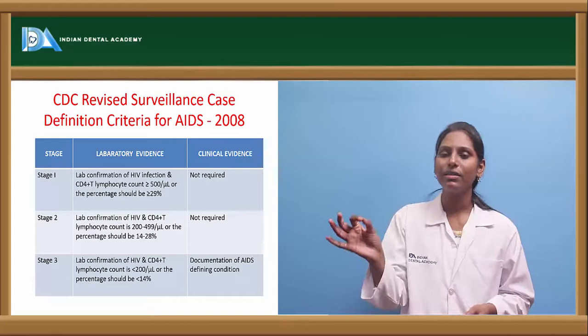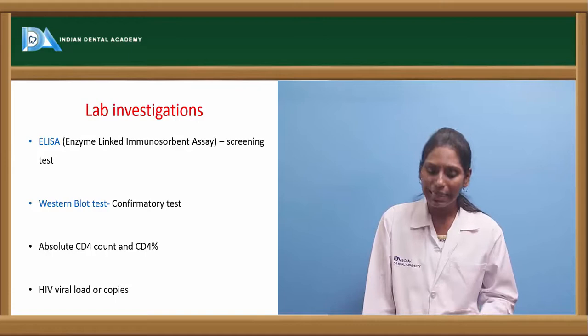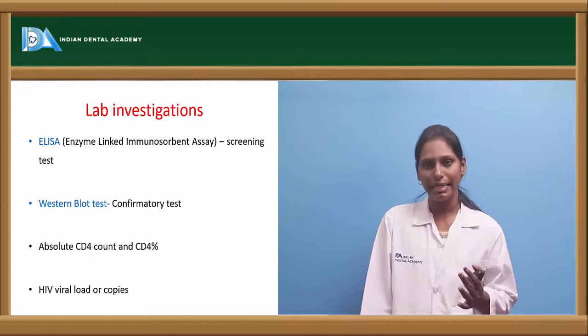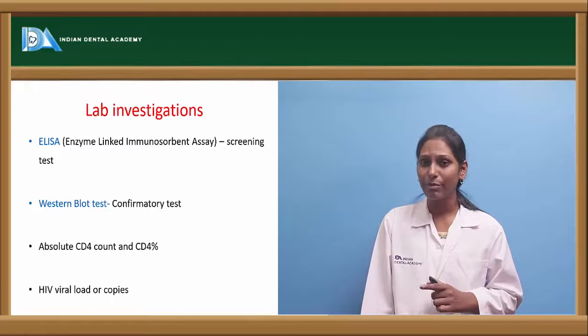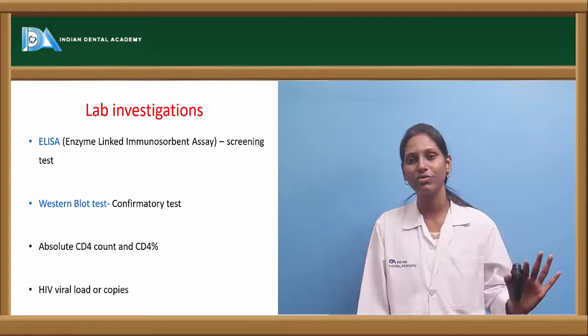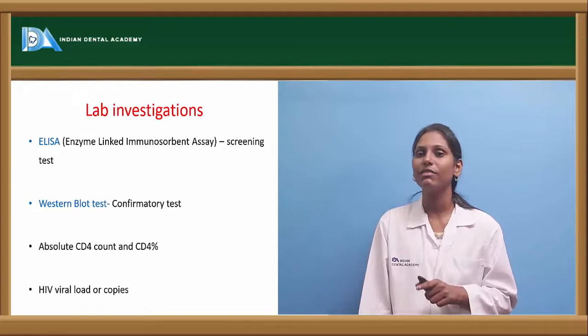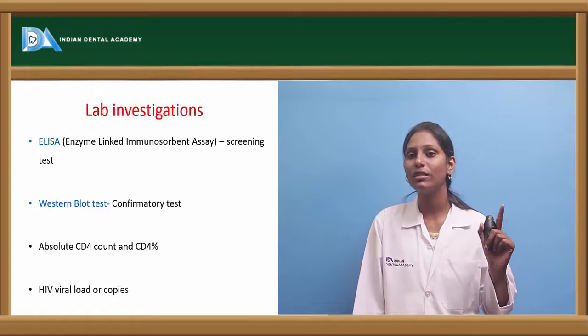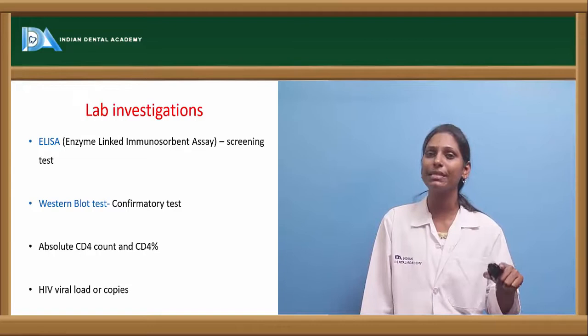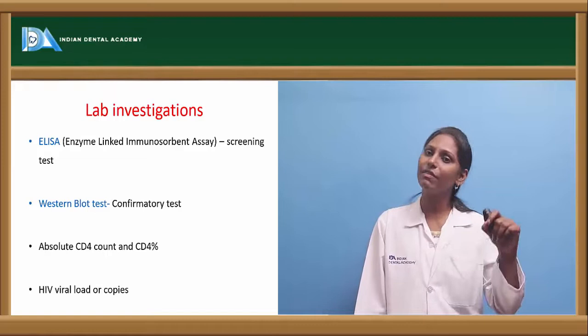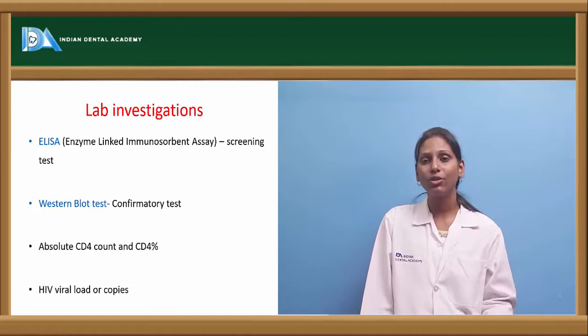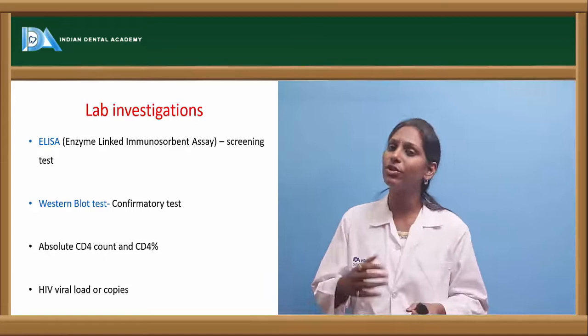For laboratory investigations, ELISA (enzyme-linked immunosorbent assay) is used as a screening test. Once ELISA is positive, we proceed to the Western blot test. However, negative ELISA results do not always mean HIV negative — in the acute retroviral syndrome phase, the patient will test negative because ELISA and Western blot check for antibodies, not antigen. Fourth generation tests that check for the p24 antigen allow detection even in the acute retroviral syndrome stage.